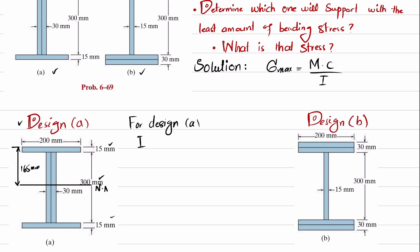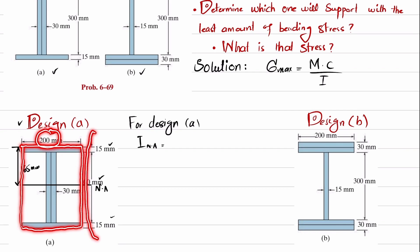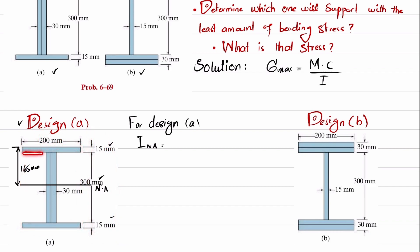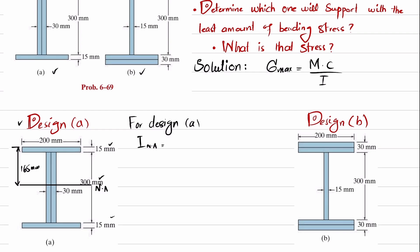We will take I about the neutral axis. For that, we will consider the full shape as a solid rectangular section. Its width is 200 mm and its total height is 330 mm. Then we will subtract the moment of inertia of the two cut-out portions. The first term is (1/12) × b × h³, where b = 0.2 m and h = 0.33 m.